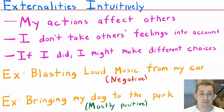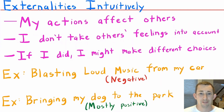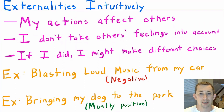Let's start off with the intuitive explanation of externalities. The reason we're talking about externalities is because I am making decisions that are best for me, but when I make those decisions that are best for me, I am not really thinking about how those decisions affect others. The idea behind externalities is we want to capture the fact that my decisions might affect others — positively or negatively.